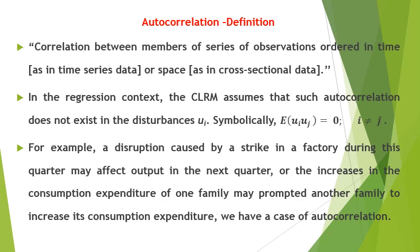If the observations are ordered in time, the data will be a time series, and if the observations are ordered in space, the data will be cross-section data. In the context of the classical linear regression model, we assume that our data does not exhibit autocorrelation among the disturbances or error terms. Symbolically, the no-autocorrelation assumption can be represented as: E(ui·uj) = 0, that is, the correlation among ui and uj equals zero, where i ≠ j. That is, the disturbance term relating to any observation is not influenced by the disturbance term relating to any other observation. When a violation of this rule is found, we have a problem known as autocorrelation.